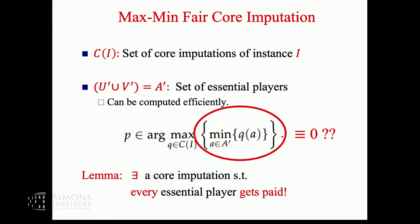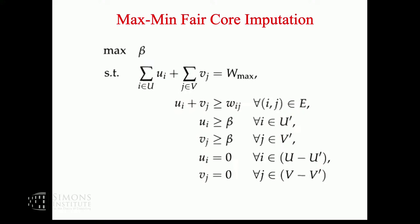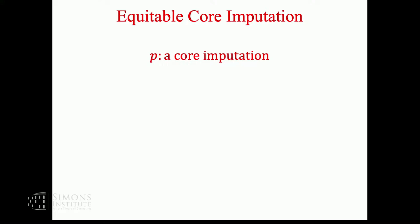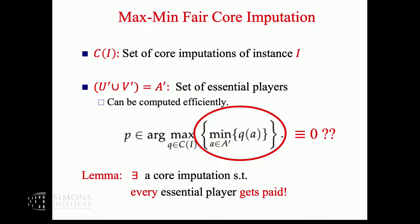And it's an LP. Can we do more? Yes, we can find an equitable core imputation. You can get to the set of essential players easily. You know the worth of the game. Now pull out a player, find the worth of the remaining game. If it did not go down, this is not essential. If it went down, then this is essential. So if you do that for each player, you got the set of essential players. Everything is polynomial time here.